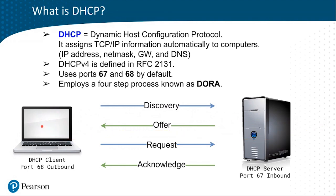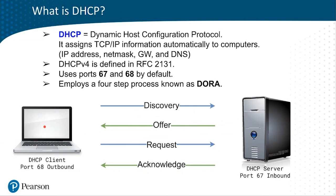In most cases, the client will want that IP address — sometimes it might not, depending on a couple of factors — but generally, more often than not, it will request that very IP address from the DHCP server. The DHCP server will then write that to its DHCP table and say: we are assigning you this IP address, and you may start using it now.